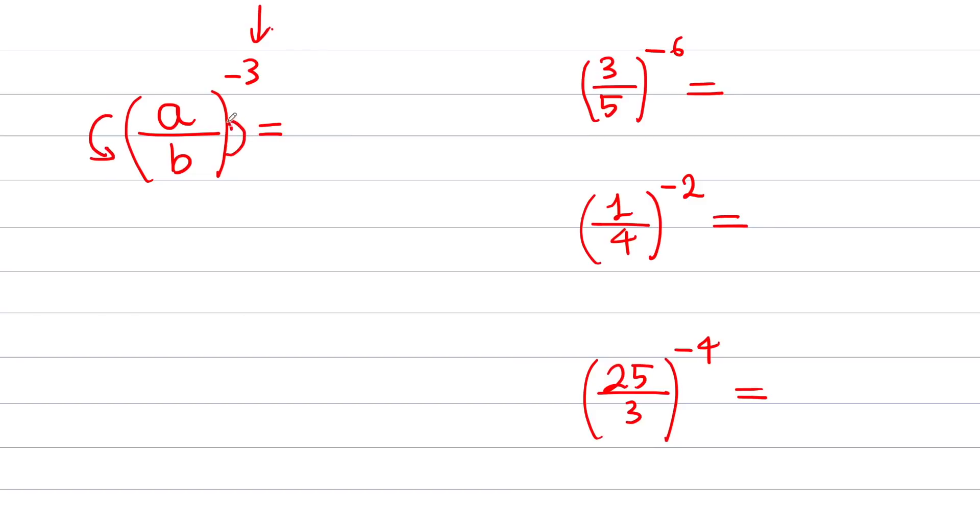For example, a over b to negative 3 power will turn into b over a to positive 3 power. Of course, you don't need to write the plus sign here.